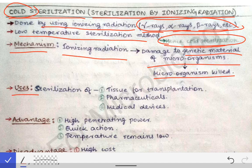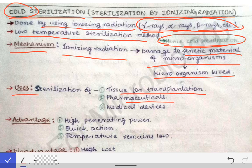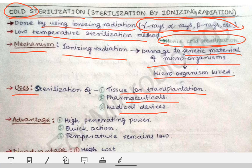The uses of cold sterilization are: it is used for sterilization of tissues for transplantation — when tissues are used for transplantation, they are sterilized by this technique. Pharmaceuticals, that is drugs, are also sterilized by cold sterilization. Medical devices are also sterilized by this technique.